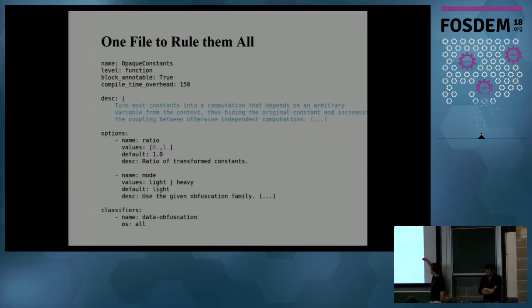So the level is like module pass, function pass, basic block pass. Block annotable means can you use it as a pragma on just an instruction or block of instruction even if it's a function pass. The compile time overhead from our measurement, when we use that, your compilation time is going to be multiplied by this factor, which is a big factor but still. This is a textual description and then you have all the options.